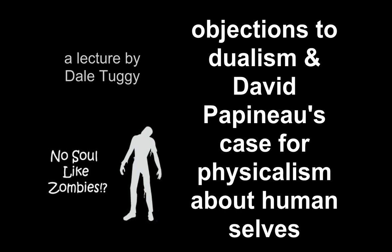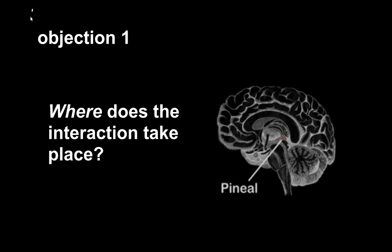So the three objections to dualism that I want to cover come from the philosopher Louis Pojman, although many people have discussed these.